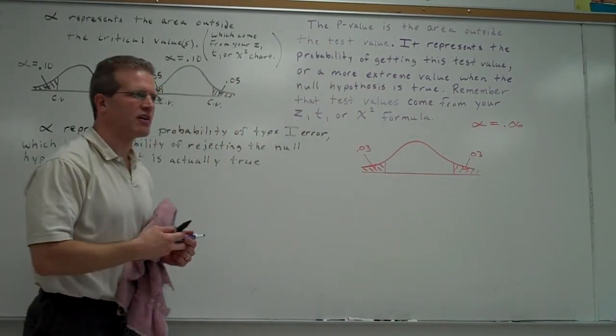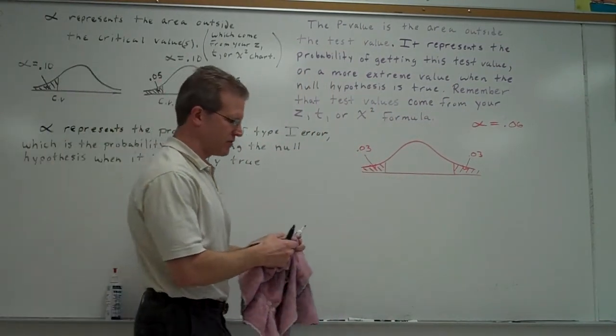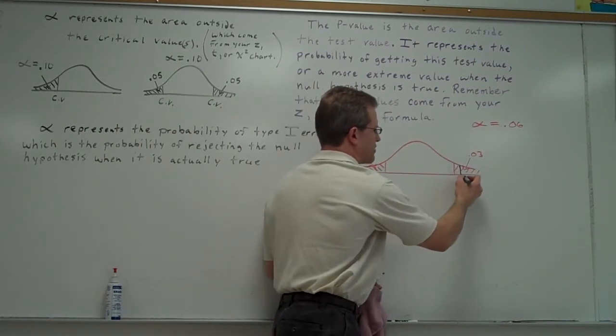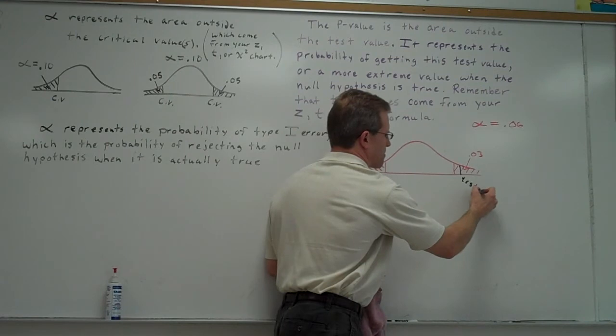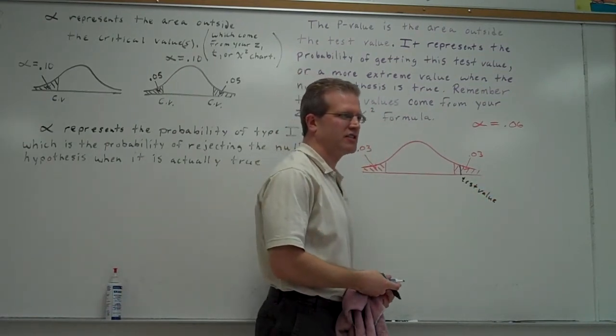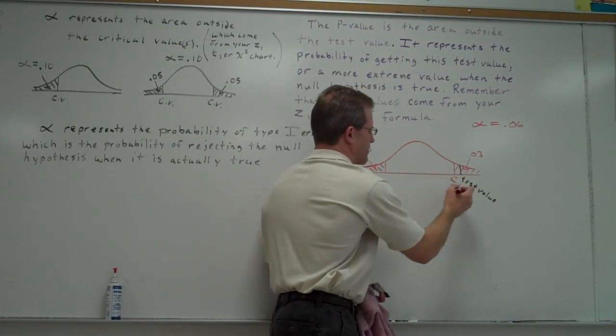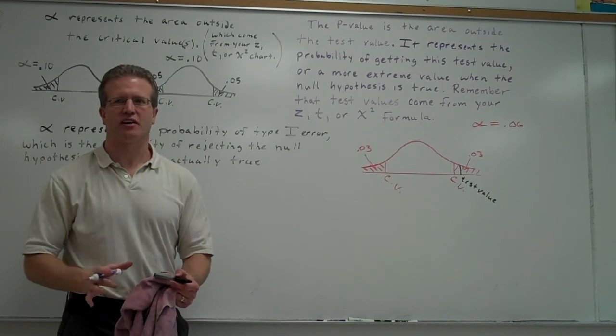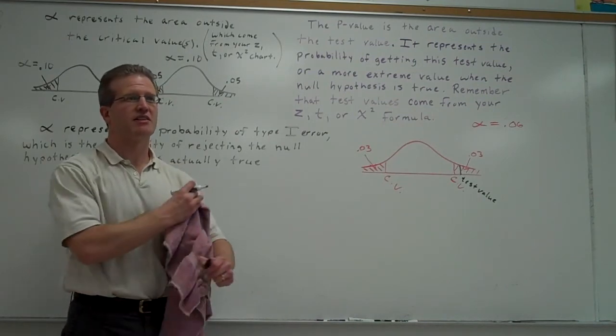What you're going to do is you're going to calculate and find a test value. Let's say the test value is here. So the test value is in black. The test value is going to come from one of your formulas, your Z, T or chi-squared formula. Your critical value is going to be in red here. One thing different about the p-value method is you don't actually have to find the critical value. You just have to find the p-value.